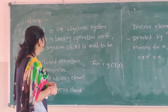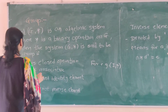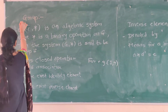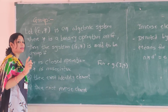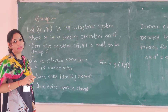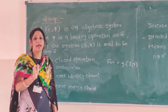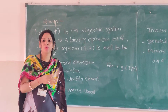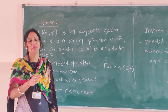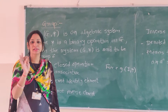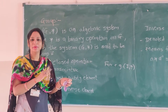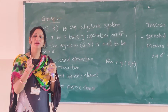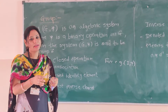In this section we will see the next term, that is group. Group is also an algebraic system. We have seen semi-group, sub-semi-group, monoid, sub-monoid — all these are algebraic systems with different properties.